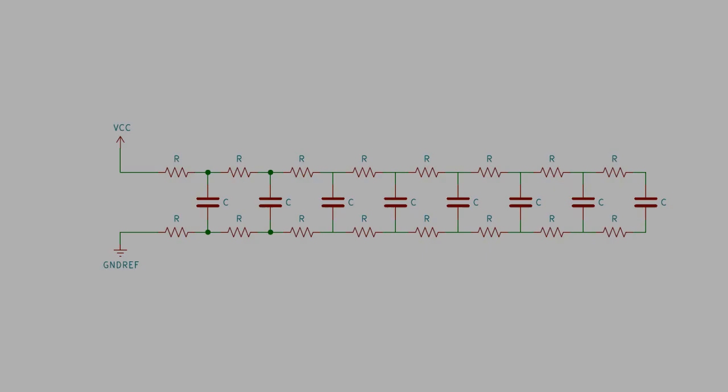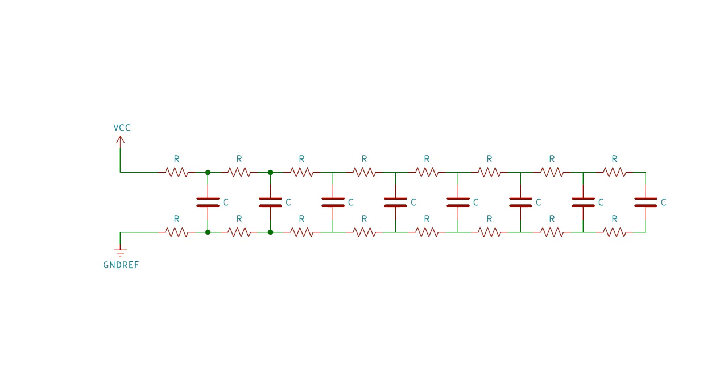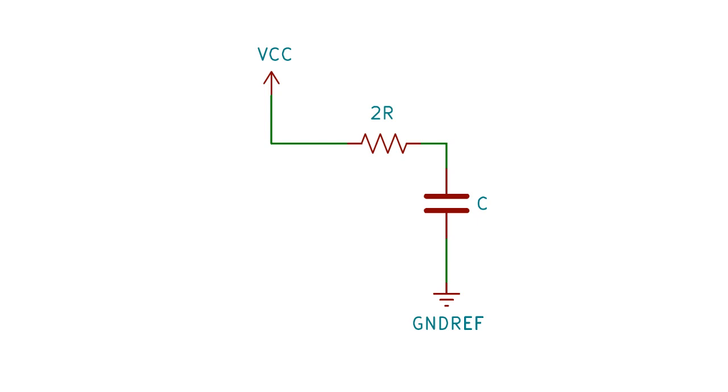Let's ignore the spark gaps for a minute and just look at the resistor capacitor network the circuit is made up of. Because each capacitor has a resistor on both the high and low side, it effectively has a charging resistance of 2R. In the case of my circuit, that comes out to 1.76 megaohms and 1nF.